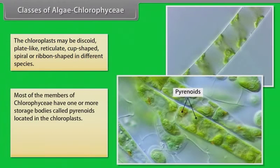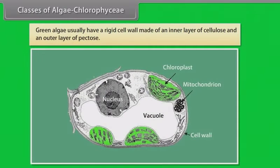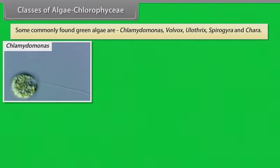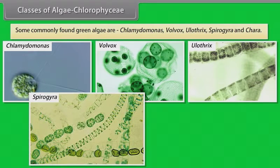Most of the members of Chlorophyceae have one or more storage bodies called pyrenoids located in the chloroplasts. Pyrenoids contain protein besides starch. Some algae may store food in the form of oil droplets. Green algae usually have a rigid cell wall made of an inner layer of cellulose and an outer layer of pectose. Some commonly found green algae are Chlamydomonas, Volvox, Ulothrix, Spirogyra and Chara.